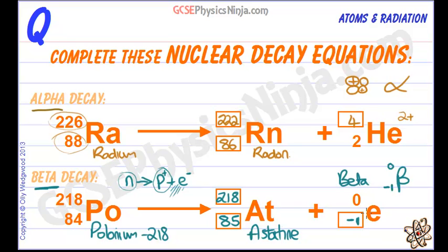We can add these numbers up so that it makes sense. 84 is 85 plus minus 1. And 218 is 218 plus zero. That works.